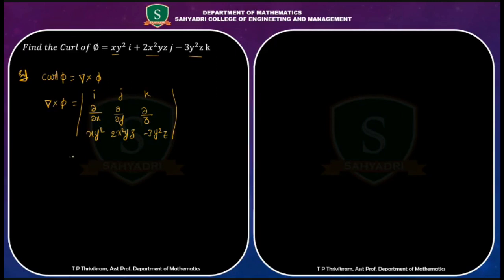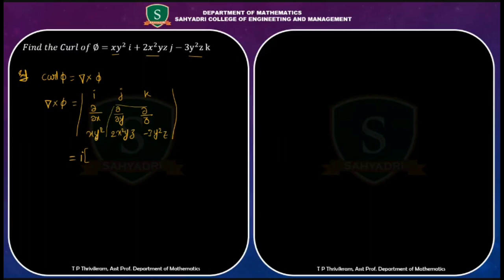Now let us find the determinant of this matrix. For the i component, we apply: ∂/∂y of (−3y²z) minus ∂/∂z of (2x²yz).